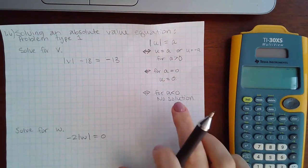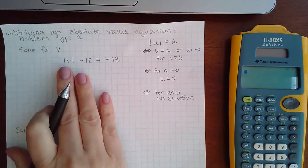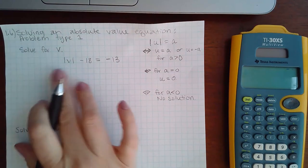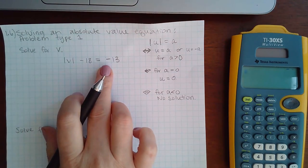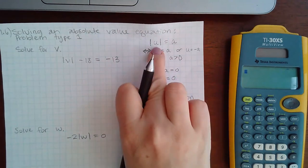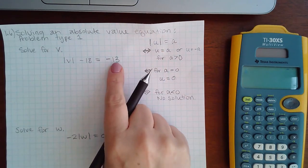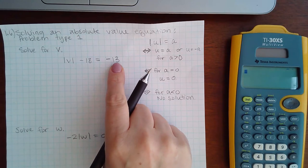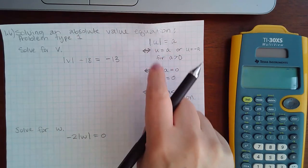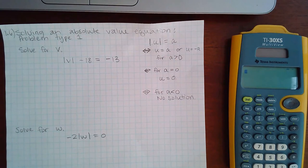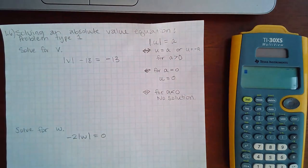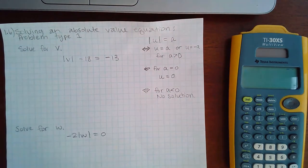So let's take a look here and see what case we end up with. We cannot determine what case it is until the absolute value bar is all by itself, because if you look at this right now it has a negative 13 over here, and if you try to draw your conclusion too early you may say this has no solution because there's a negative 13.